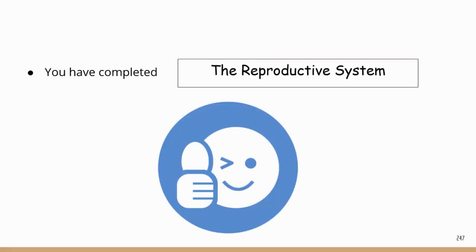Good job, you just completed the reproductive system. We're getting very close to the end of anatomy and physiology — we have one more lesson left on the endocrine system, and then we'll move on to physical and life sciences, which will be the second part of the science review. Let me know if you have any questions. If you find the video helpful, subscribe, give it a thumbs up, leave a comment, and let me know if you have any suggestions or topics you'd like me to discuss.